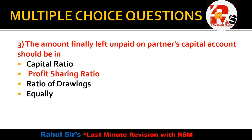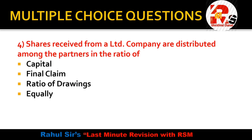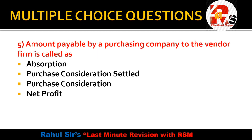Question 4 is from the chapter of conversion of partnership into a limited company, which is somewhat related to amalgamation. The question asks: shares received from a limited company are distributed among the partners in which ratio — capital ratio, final claim ratio, ratio of drawings, or equally? The answer is that they are distributed in the final claim ratio.